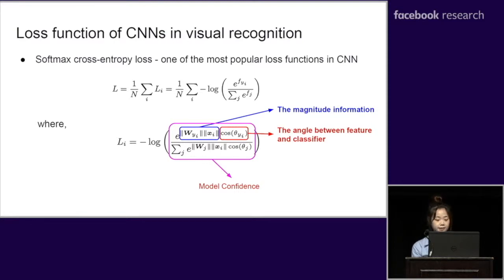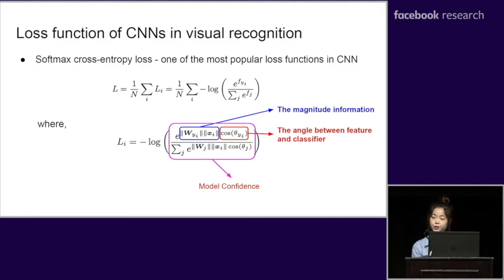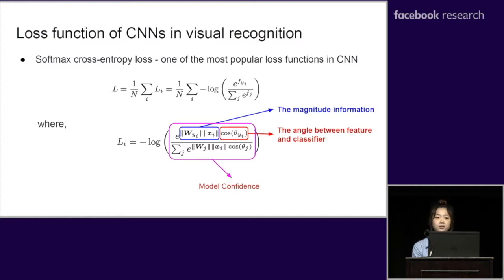Typically in CNN-based visual recognition, we use softmax function and cross-entropy loss as the objectives. Specifically, we define the model confidence as the softmax output of the largest class. More interestingly, we decompose the inner product between the weights of the classifiers and the deep-learned feature embeddings of inputs into respective L2 norm and the cosine of angles between them. We argue that the angle plays a much more important role in determining an image's visual hardness.